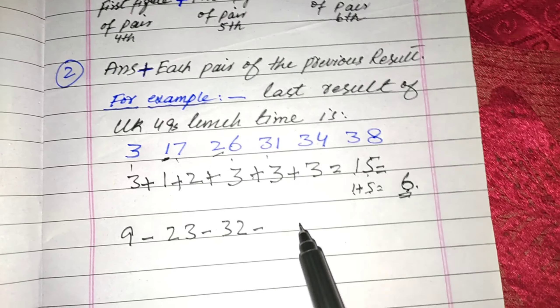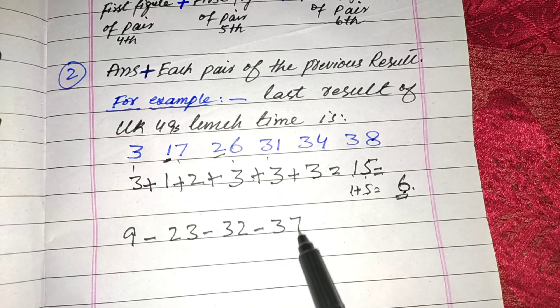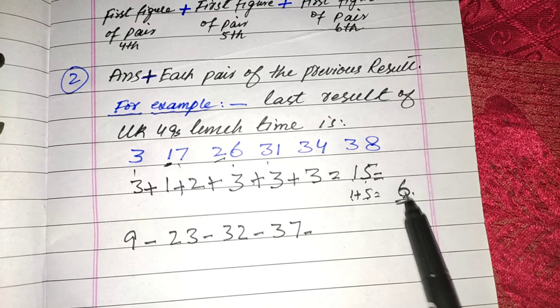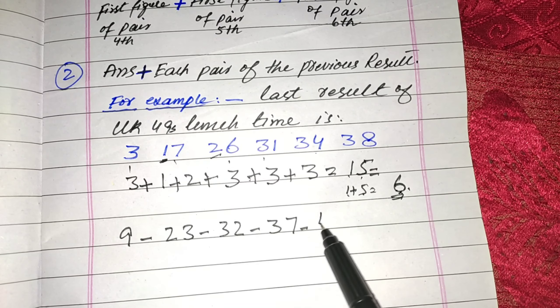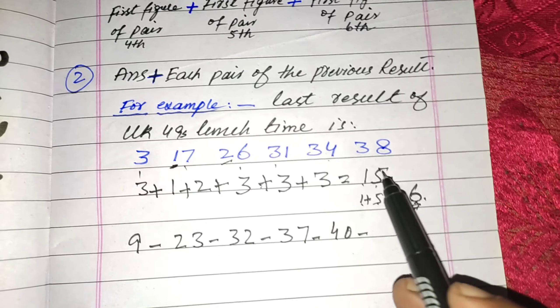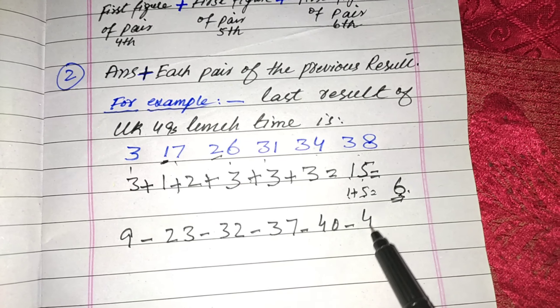6 plus 31 is 37, 6 plus 34 is 40, and 6 plus 38 is 44.